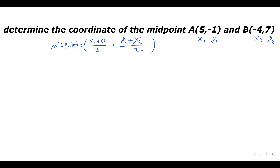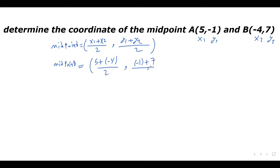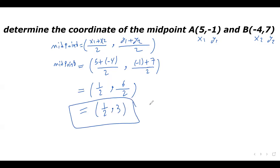This is our formula. Our midpoint equals x1, which is 5, plus x2, which is negative 4, divided by 2. And y1, which is negative 1, plus y2, which is 7, divided by 2. Our midpoint equals 5 + (−4), that's positive 1, over 2. And the y value is (−1) + 7, which is positive 6, divided by 2. So our midpoint is (1/2, 3). This is the coordinate of our midpoint.